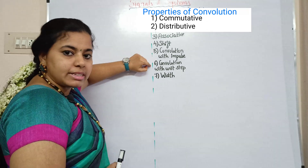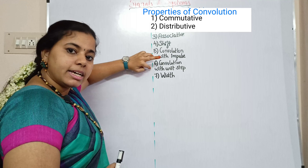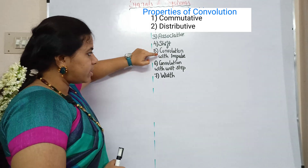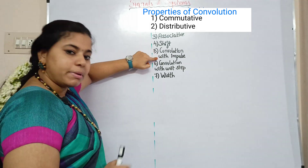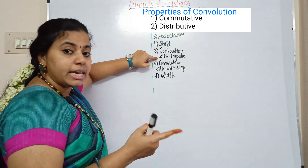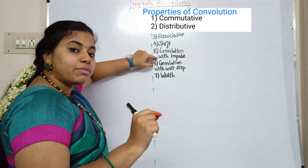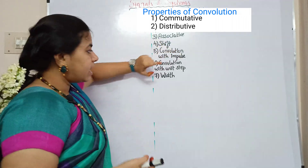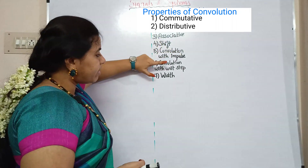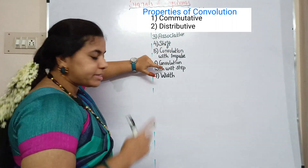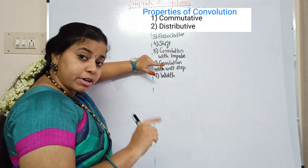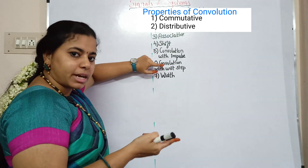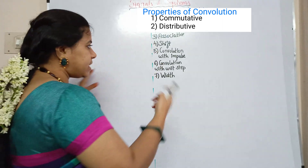Actually, in the 5th and 6th, there is another property. Convolution with impulse is this, convolution with shifted impulse is this. That's why convolution with unit step is this, and convolution with shifted unit step is this. It's a very good idea.